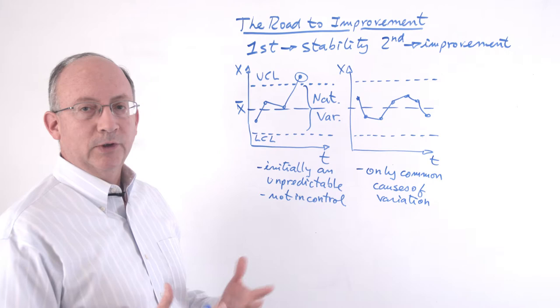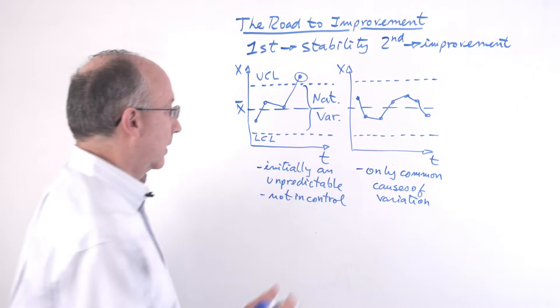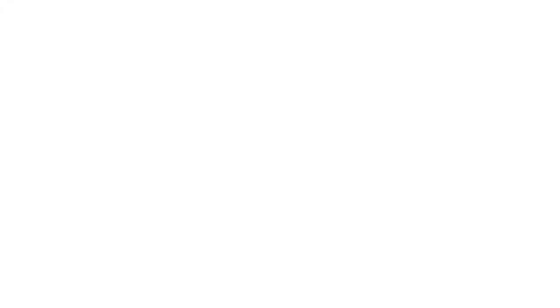So, it becomes a manageable process as opposed to something that is always at risk of giving us a surprise, usually not a desirable surprise, not a good surprise. And so, the process is predictable and can be managed, manageable.